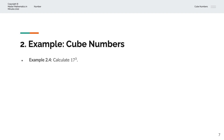In the fourth example, we're asked to calculate 17 to the power of 3, or 17 cubed. So 17 cubed is equal to 17, multiplied by itself, which is 17, and multiplied by itself again, which is 17. And that is equal to 4913.